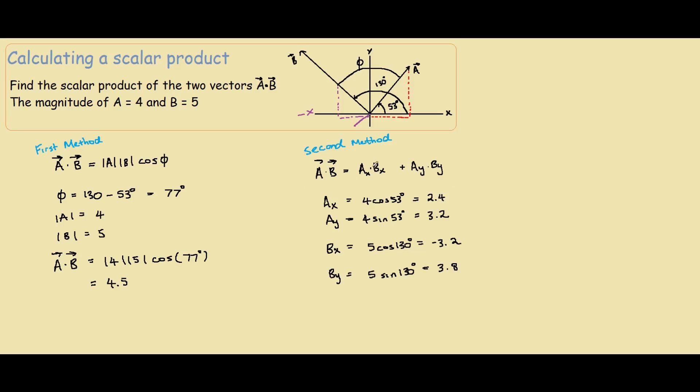So multiplying these together using this formula, we should get the same answer, 4.5. A dot B would equal 2.4 times negative 3.2 plus Ay is 3.2 and By is 3.8. If you multiply that out together, you should get 4.5.